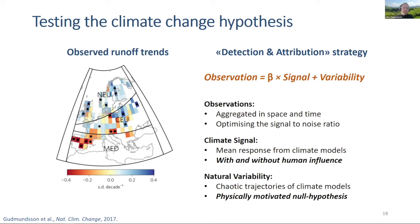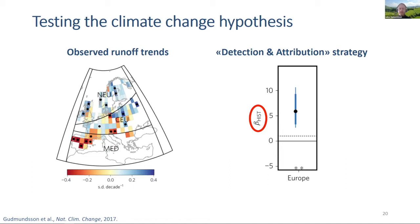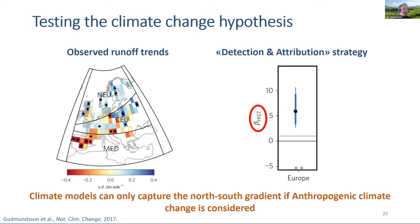Inference is done by focusing on beta, a regression coefficient. If beta is larger than one, the observations and signal are significantly correlated given estimates of natural variability. For this particular European case, we can show significantly positive scaling factors, yielding the conclusion that climate models capture the north-south gradient only if anthropogenic climate change is considered.